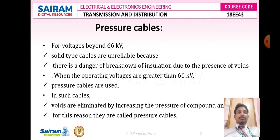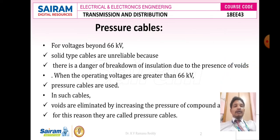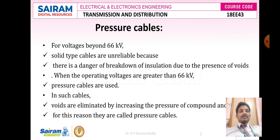Pressure cables are solid type cables which are unreliable because there is a danger of breakdown of insulation due to the presence of voids. When the operating voltages are greater than 66 kV, pressure cables are used because in such cables voids are eliminated by increasing the pressure of compound. As we know from the earlier classification like H type cables and SL type cables, there are more layers of insulation. As the number of layers of insulation increases, the insulation can become very hard because it is placed underground, affected by temperature and heavy rainfall. The insulation becomes so hard and it may get treeing and tracking, and voids take place.